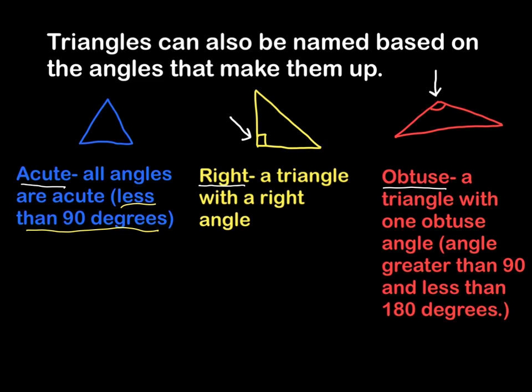And then with our right triangle, very simply, a right triangle is a triangle with a right angle. So you can see in that right angle, it's typically noted with a little box in the corner. This box represents a 90 degree angle.